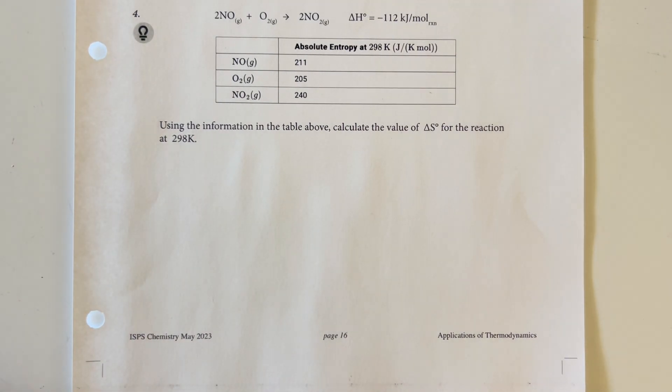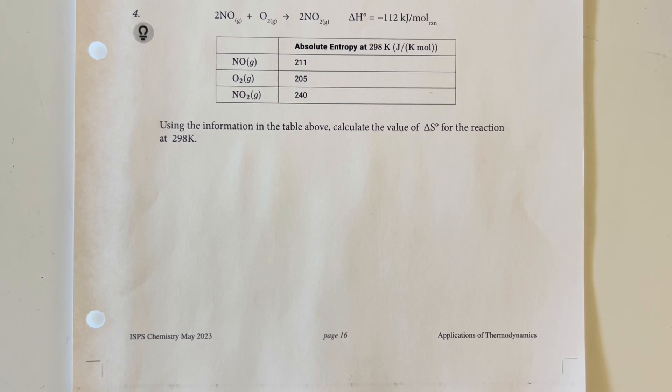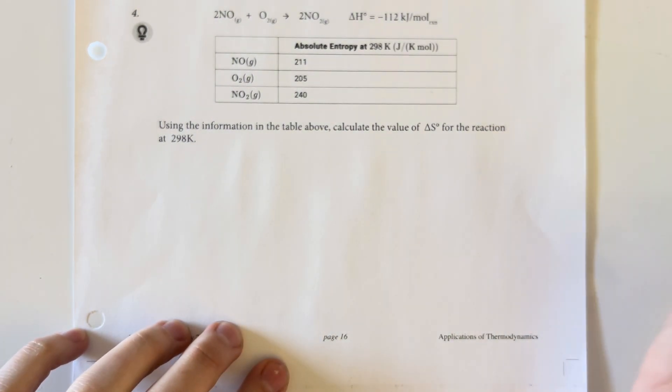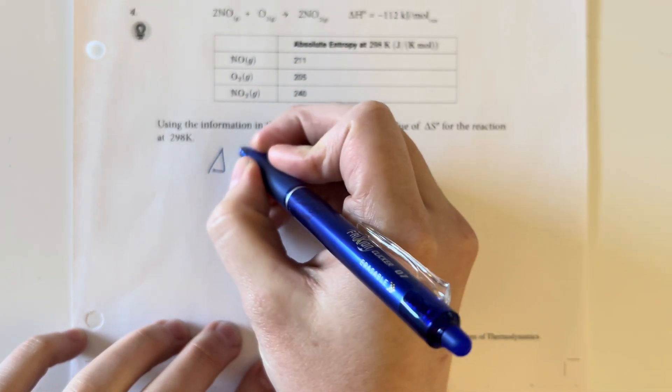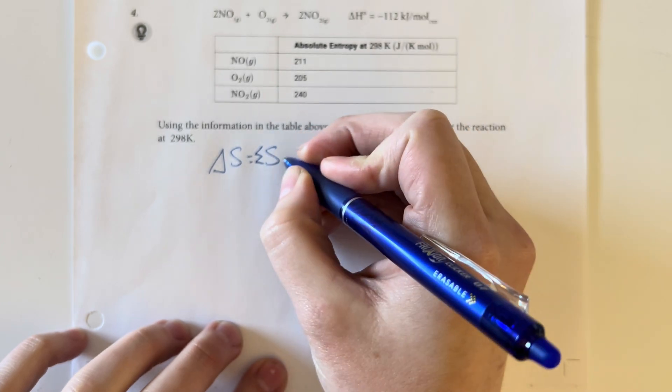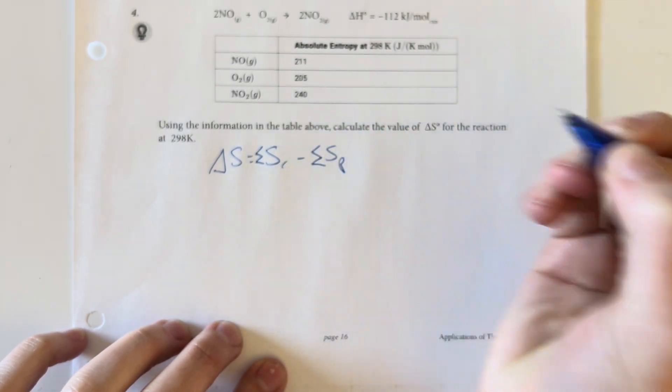Use the following information from the table above to calculate the delta S value for the reaction at 298 Kelvin. This is the exact same thing we've done in the previous two problems. Delta S is the sum of the entropies for our reactants minus the sum of our entropies for our products.